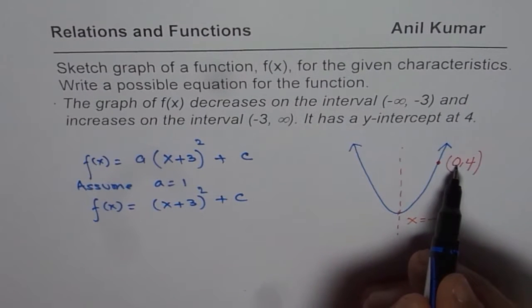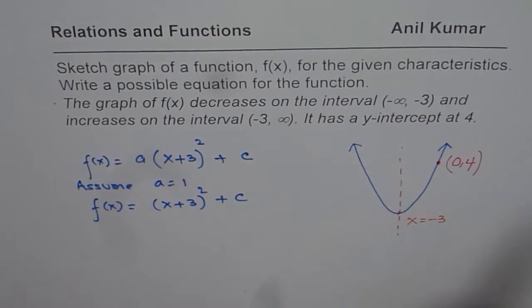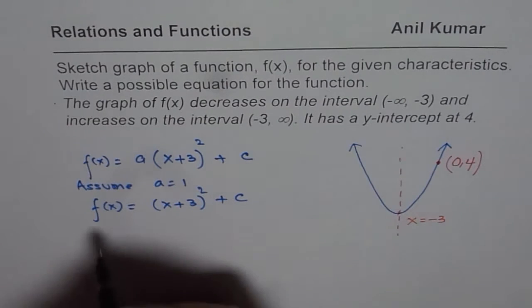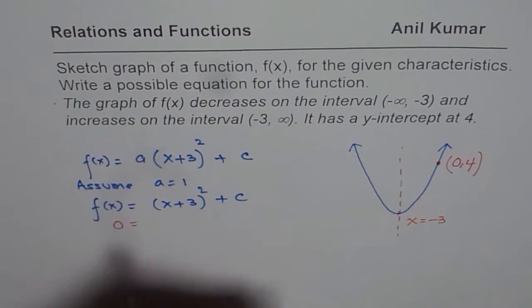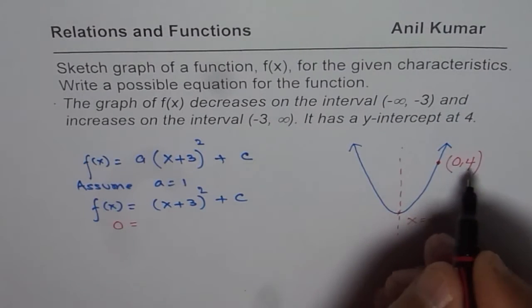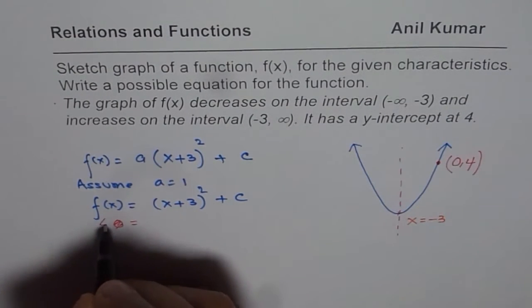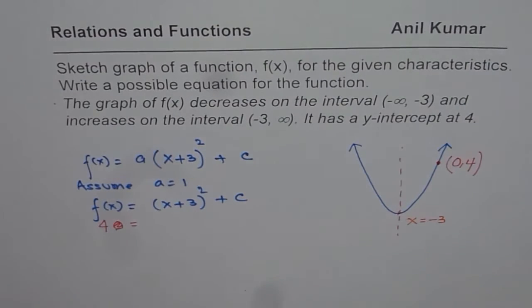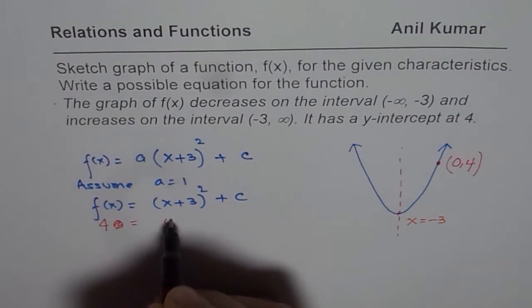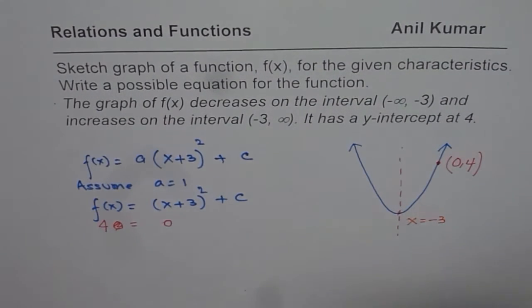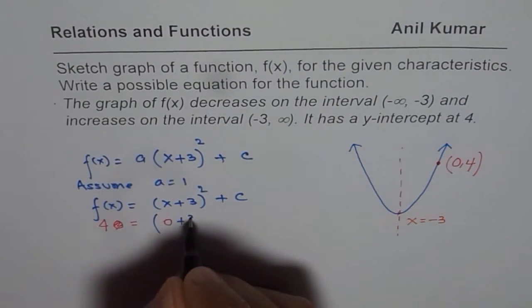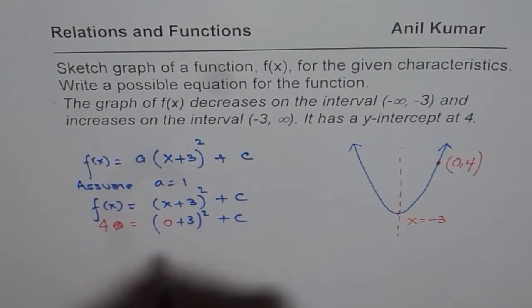We can use 0 as x value, 4 as the y value. Substituting 0 here we get y value is 4. So we will substitute 4 for f(x) and 0 for x and then calculate. So we have (0+3)² + c.